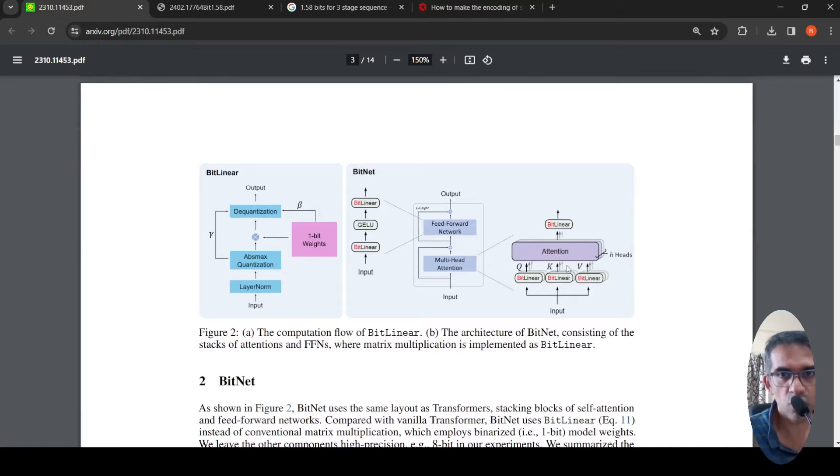So what they are doing is in your transformer architecture. You have this computation of attention. So every linear layer is being replaced by something called as a bit linear layer. In the feed forward network also, every linear layer is replaced by something called a bit linear layer. And this is a particular computation flow of a bit linear.